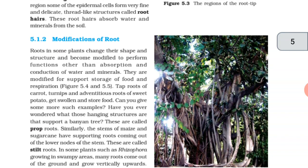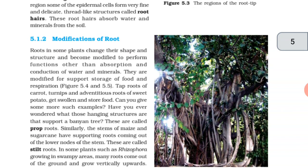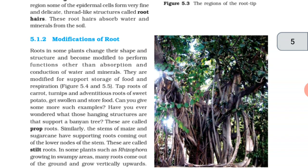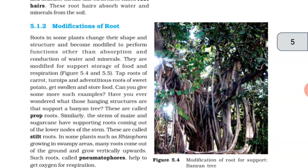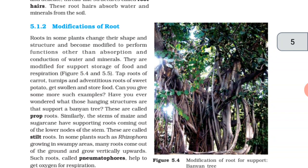Tap roots of carrot, turnip, and adventitious roots of sweet potato get swollen and store food. Have you ever wondered what those hanging structures are that support a banyan tree? These are called prop roots. Similarly, the stem of maize and sugarcane have supporting roots coming out of the lower nodes of the stem. These are called stilt roots.